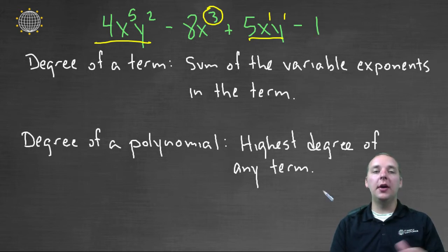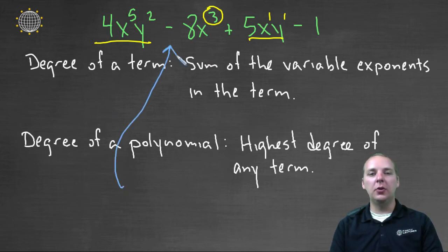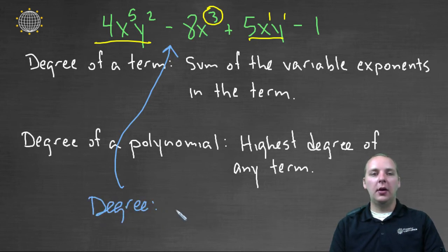So now what's the degree of the entire polynomial? Well it's defined as the highest degree of any term, and that's what it's always been. So even though you have multiple variables, you can still talk about the degree of the polynomial. This particular polynomial here has degree 7, because degree 7 was the highest degree of any of the individual terms.